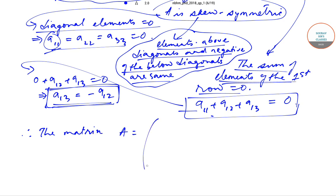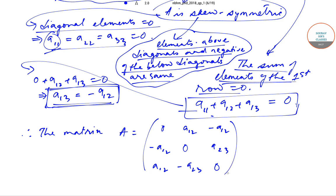The matrix A will look like this: the diagonal entries are all 0, the (1,2) entry is a_{12}, the (1,3) entry is -a_{12}, the (2,1) entry is -a_{12}, the (2,3) entry is a_{23}, the (3,1) entry is a_{12}, and the (3,2) entry is -a_{23}. This is the structure of the matrix.